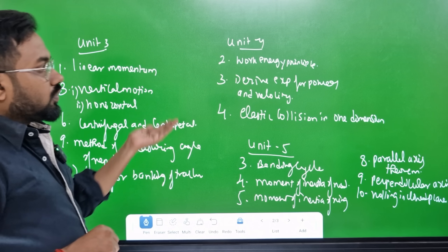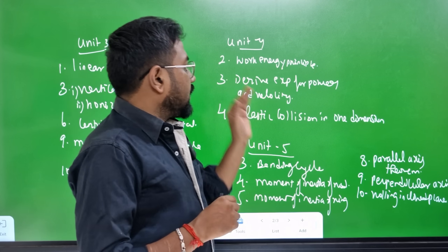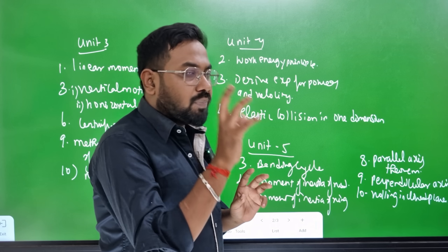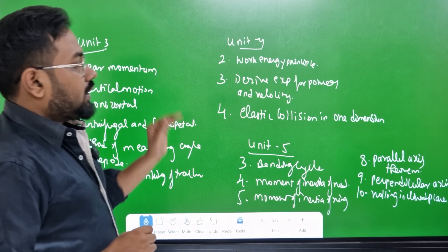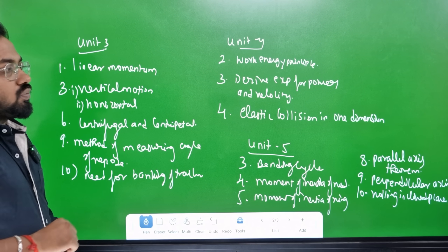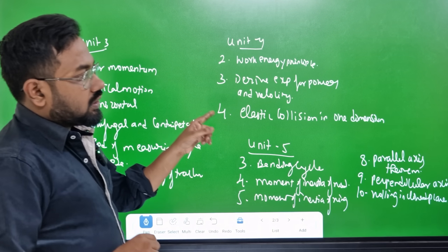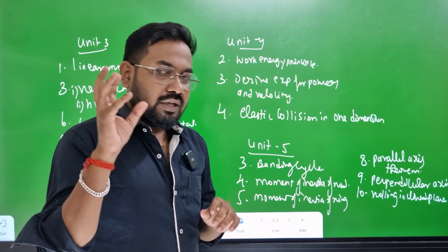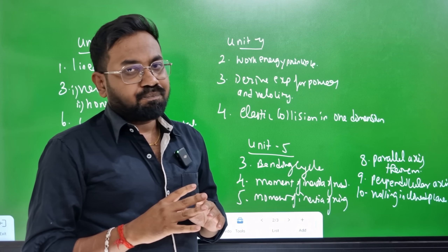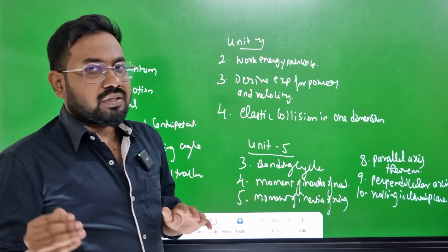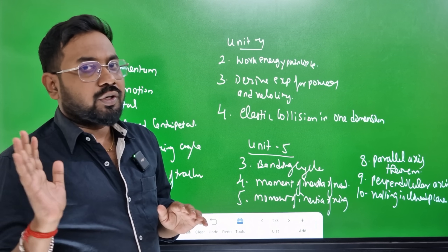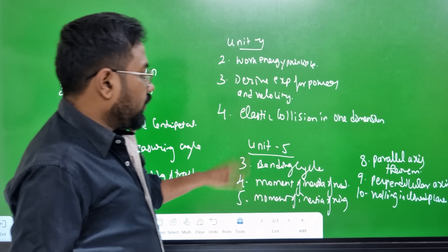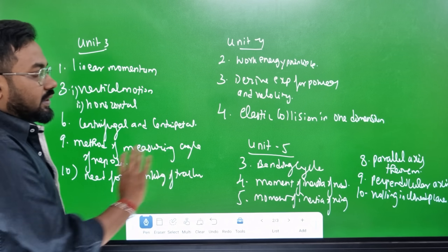Unit 4 is work-energy principle — derive expression for relation between power and velocity, very important. Elastic collision in one dimension: if you want to study the case you can, but if you want to study the derivation, calculate v1 and v2 for one-dimension collision.